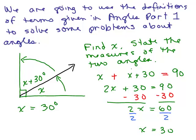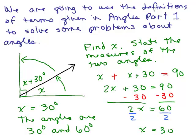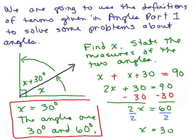The question also says to state the measure of the two angles. One angle is just X, which is 30 degrees. The other angle is X plus 30, so 30 plus 30 equals 60 degrees. And we can convince ourselves: if one angle is 30 and the other is 60, they add up to 90 degrees — yes, they do. That's the first problem.